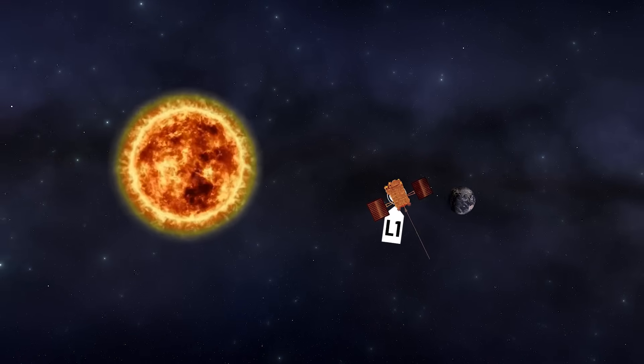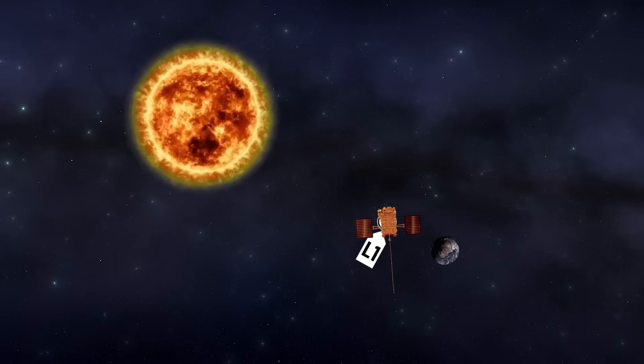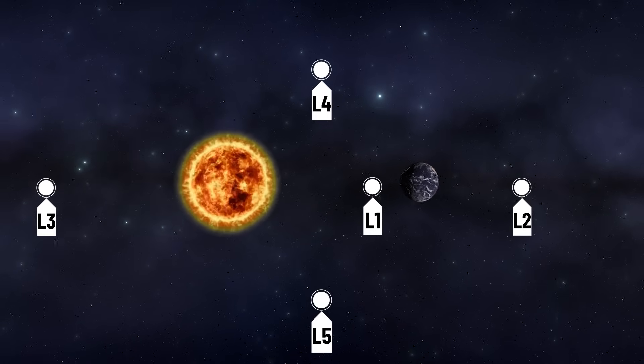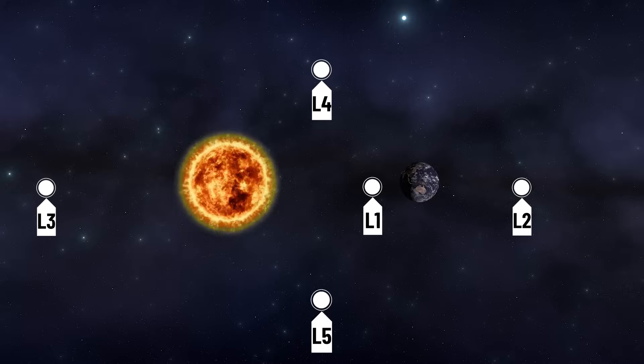Additionally, the spacecraft will stably revolve along with the earth. Considering the earth and the sun, there are five Lagrange points. If you look at the screen, you can understand where these five Lagrange points are located.